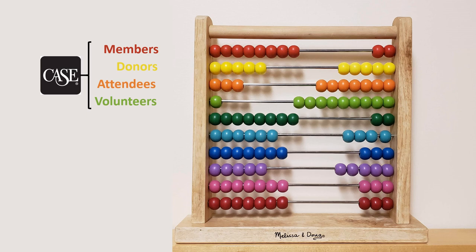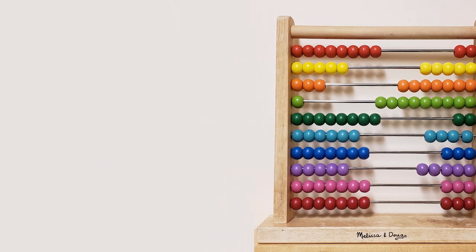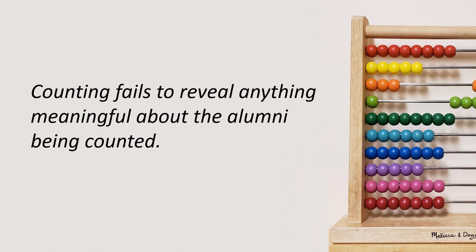But there are some important things that are being left out. Everyone does an e-newsletter — why are we not counting email readers? And what about Facebook, LinkedIn, Instagram, and other social media accounts and interactions? We're really missing digital engagement entirely in the context of what CASE is promoting. I've started to call it lowest common denominator alumni metrics. That counting fails to reveal anything meaningful about the alumni being counted. What does it even mean to say that someone showed up at an event or became a member or a donor? It's really just a one or a zero in your database.